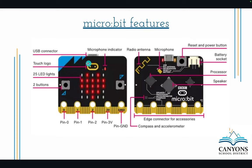There are touch logos that the kids can touch and program to do different things. They can also program the buttons A and B, and it has the ability to shake it to get it to respond. There are pins at the bottom — so maybe they want to focus on hydroponics or different sensors. There is also a radio antenna, so if they want to program a robot, they can use one micro:bit as a controller and one micro:bit in the robot, programming the two to communicate.